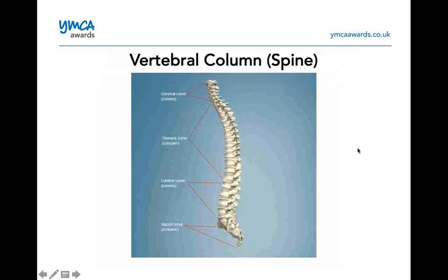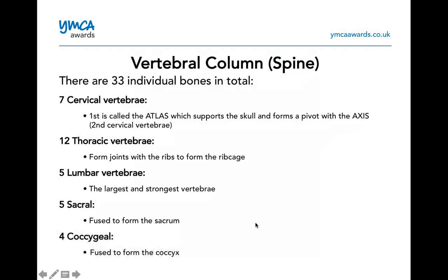An important part is the vertebral column or the spine. The spine is split into sections: the cervical curve, the thoracic curve, the lumbar vertebrae, the sacral vertebrae, and then the coccyx or coccygeal. The vertebral column has 33 individual bones in total — seven cervical, 12 thoracic, five lumbar, five sacral, and five coccygeal. The coccygeal bones are fused to form the coccyx.